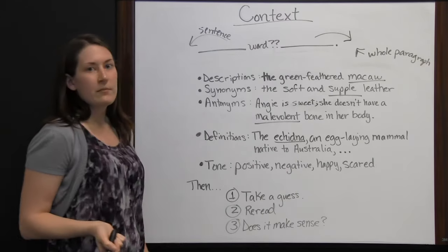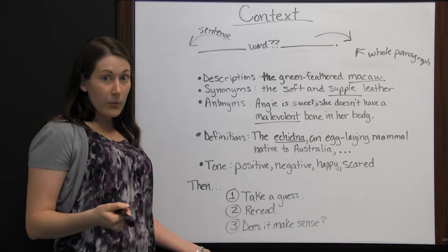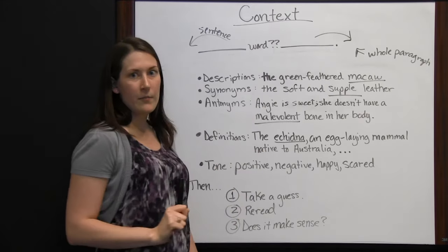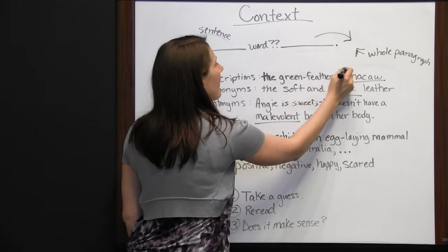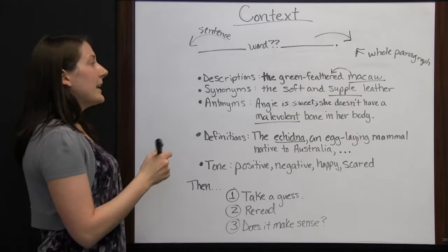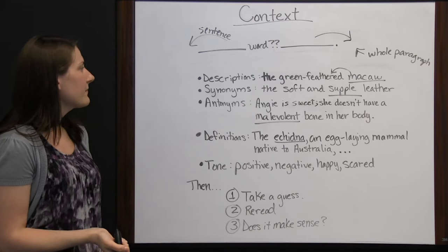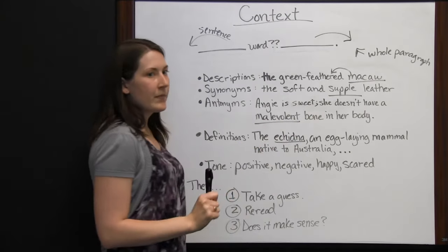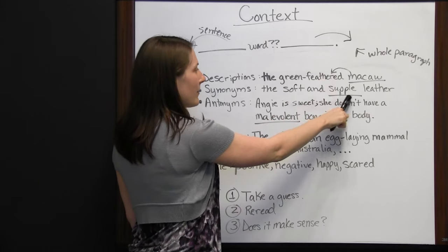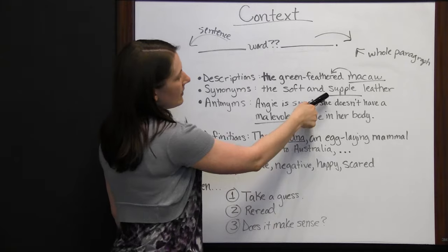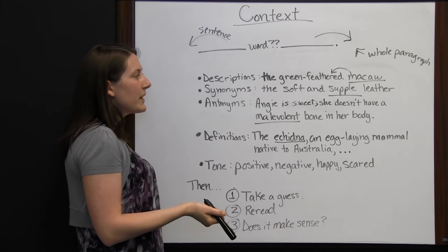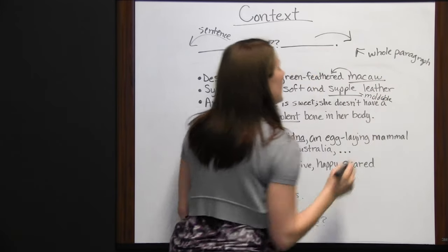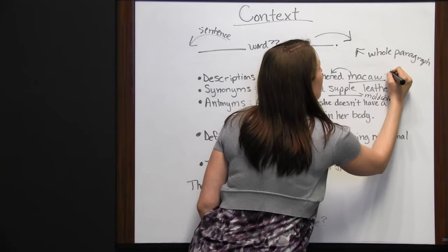There are some clues that can help determine what a word means. One is a description — sometimes a nearby sentence will describe the unfamiliar word. For instance, 'the green feathered macaw' — you may not know the word macaw, but by saying 'green feathered' you can infer it's some kind of bird. Another clue is synonyms. If you hear 'the soft and supple leather,' since 'soft' and 'supple' both describe leather, you can figure out supple probably means soft — in reality, it means moldable.